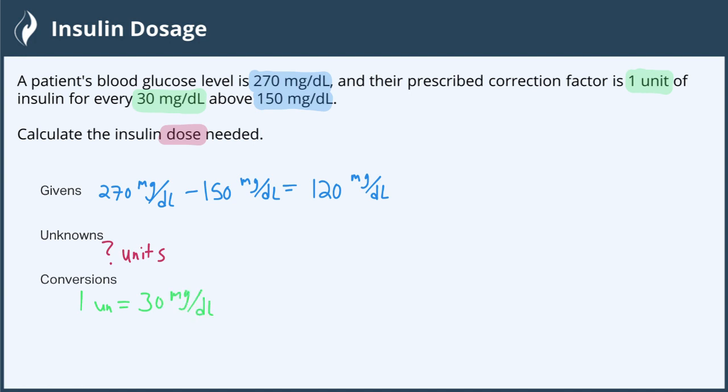Now we have all the information we need. We can set up our conversion rate with dimensional analysis. So let's put our given in the first part of our railroad track here, 120 milligrams per deciliter. And we have a conversion of one unit for 30 milligrams per deciliter.